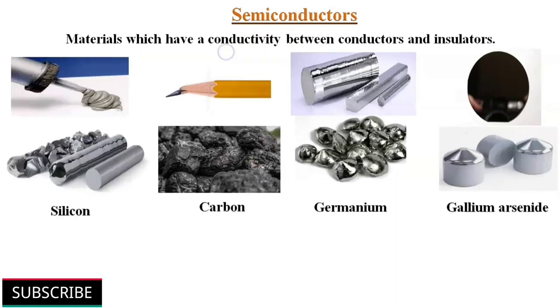There are some materials that are neither good conductors like copper nor insulators like plastic. Their electric conductivity is in between conductors and insulators. These materials are classified as semiconductors. Silicon, carbon, germanium and etc. are some examples of semiconductor material. Semiconductors have some useful properties and are being extensively used in electronic circuits. We will discuss about semiconductors thoroughly in some other videos.